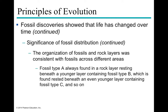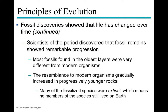The rule of layers states that rock layers indicate the relative age of fossils within them. If fossil type A is always found beneath a younger layer containing fossil type B, which is beneath an even younger layer containing fossil type C, you can determine the relative order of these organisms on Earth. This also shows progression: fossils from the oldest layers are very different from modern organisms, while fossils from younger rocks more closely resemble modern organisms.